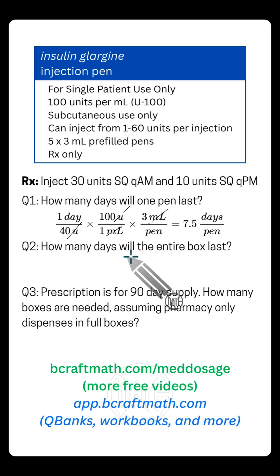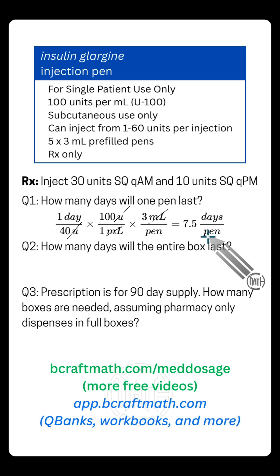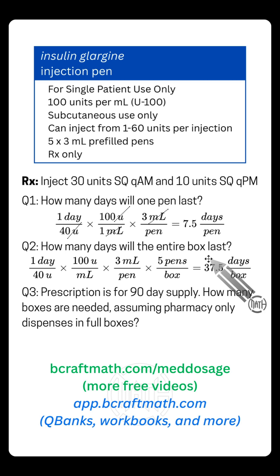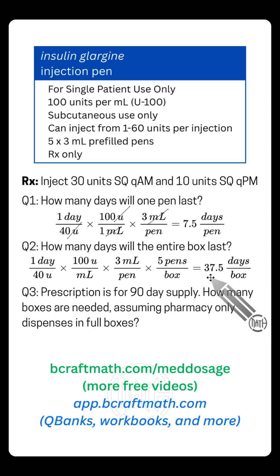Second question: how many days will the entire box last? There are five pens in the box. Going back to our calculation, we know one pen lasts seven and a half days — setting aside the rounding discussion. Multiply by five and you get 37.5 days per box. The same rounding question applies: do you say 37 or 38? Check your teacher's rounding rules or pharmacy policy.